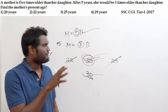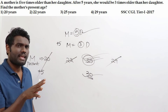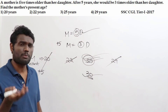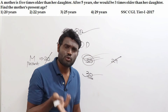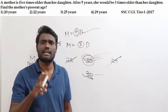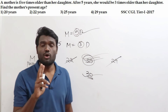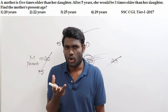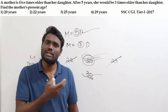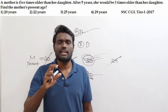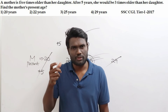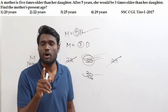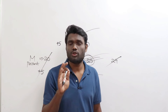If I solve this question the normal way it takes time, but with option verification it takes just a fraction of two seconds. The only thing is you need to practice more examples. Once you're habituated to option verification, you just need to understand the question and you can solve it in a fraction of a second.